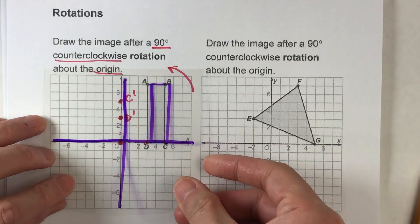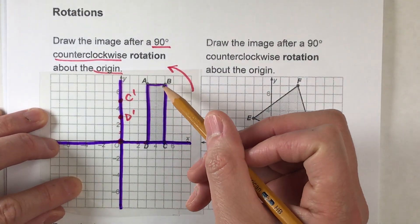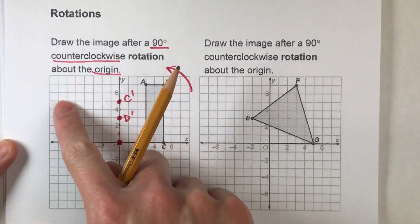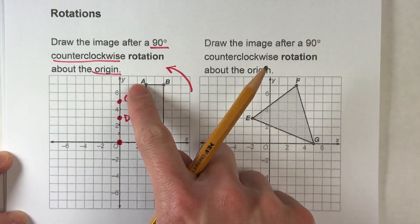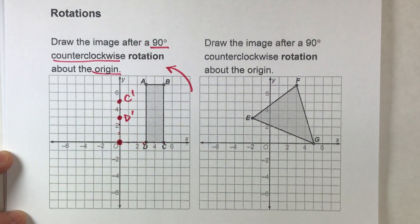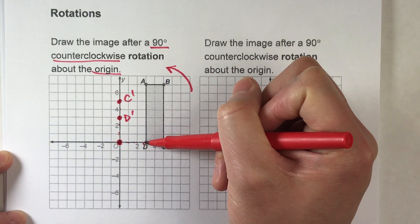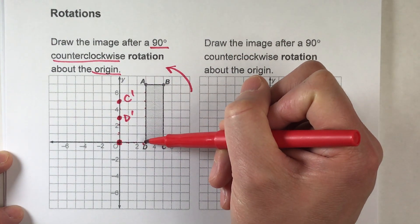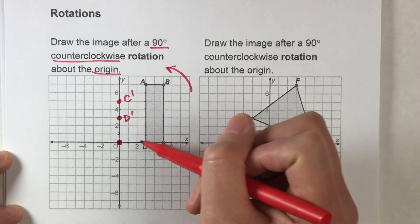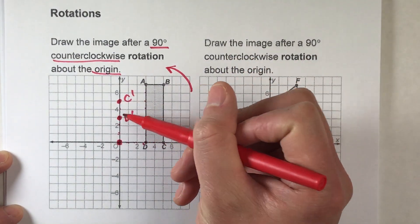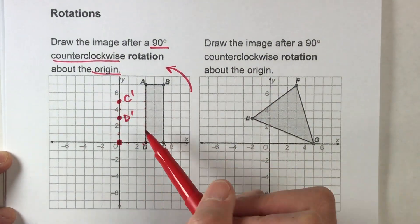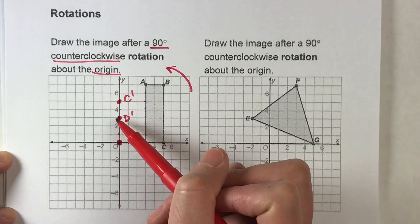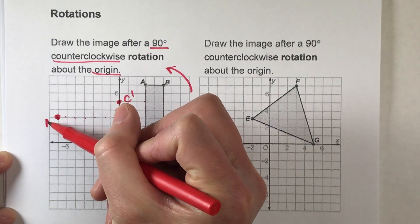The other two points are gonna be a little bit harder, but here's how I like to think of it. A and B are currently in this quadrant. When it rotates, it's gonna end up in this quadrant. Now A is not on the axes, but notice that A is directly above point D, and it's seven steps away from point D on the x-axis. So when I rotate it, it's not gonna be above the x-axis anymore, but it's gonna be still seven steps away from point D. So A is gonna be seven steps to the side — that's A prime.